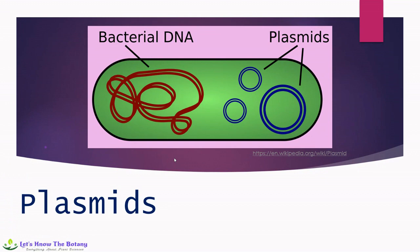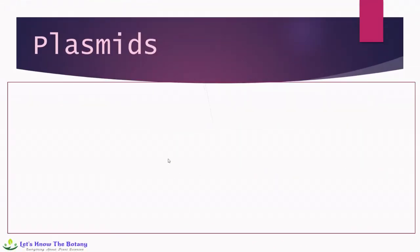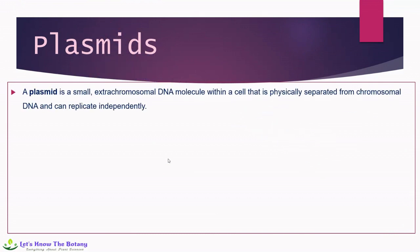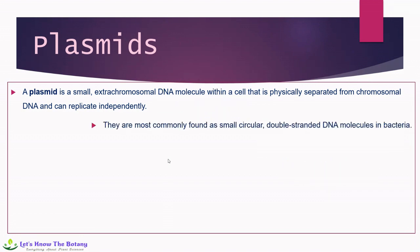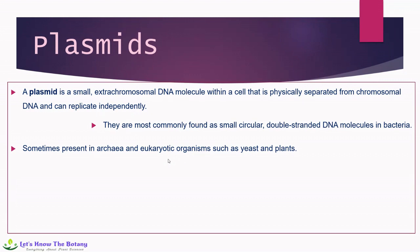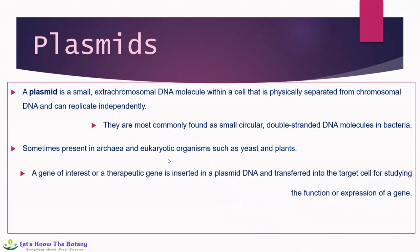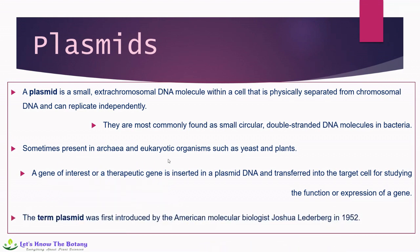First, we will discuss plasmids. Plasmids are nothing but small extrachromosomal DNA molecules within a cell that are physically separated from chromosomal DNA and can replicate independently. They are most commonly found as small circular, double-stranded DNA molecules in bacteria, and sometimes present in archaea and eukaryotic organisms such as yeast and plants. A gene of interest or therapeutic gene is inserted into a plasmid DNA and transferred into the target cell for studying the function or expression of a gene. The term plasmid was first introduced by American molecular biologist Joshua Lederberg in 1952.